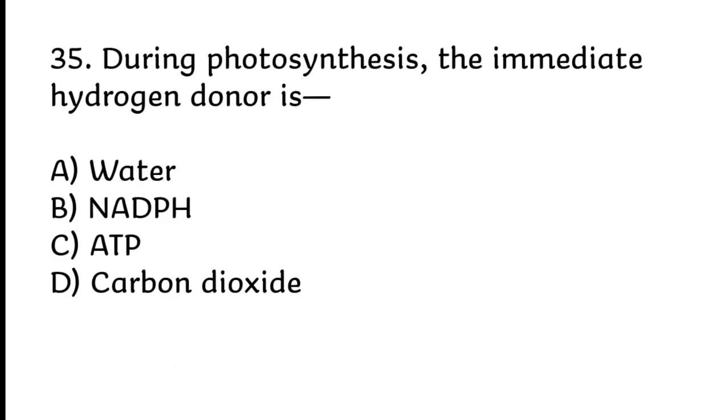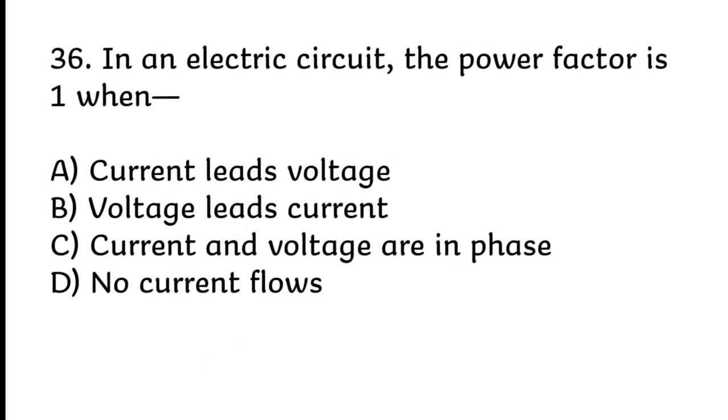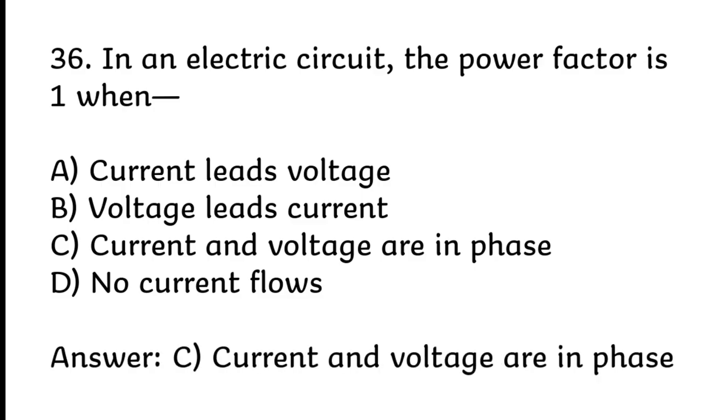During photosynthesis, the immediate hydrogen donor is water. Correct answer is A, water. In an electric circuit, the power factor is one when current and voltage are in phase. Correct answer is C, current and voltage are in phase.